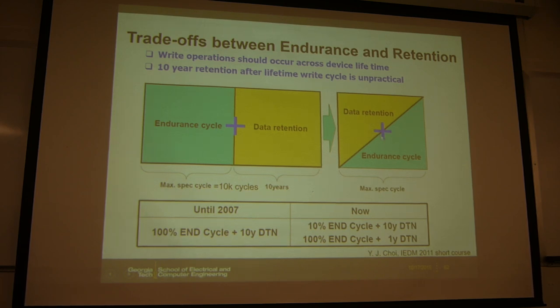This is the hope. But in reality, then those two will affect each other. So for example, if you just cycle the device for 10% of the end cycle, that means you cycle it for 1K. So probably, it can still maintain like 10 years. But if you already cycle this device for like 10K cycles, then probably this device can only sustain like one year retention time. So this is the trade-off.